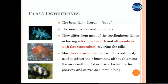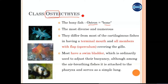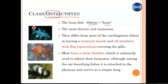Class Osteichthyes means the fish which have bones in their skeleton — the bony skeletons. Osteon is the word which means bone, and ichthyes we already know as fish. So all the bony fish which we know — goldfish, guppies, seahorses, lungfish — they all come in this class Osteichthyes.